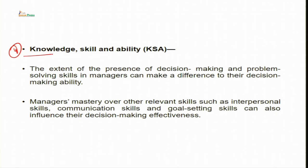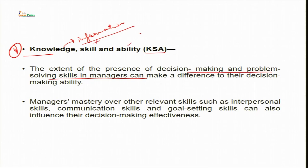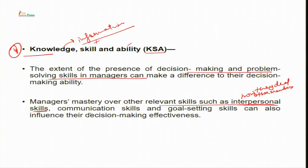The third internal factor is knowledge, skill and ability of the manager. The extent of decision making and problem solving skills in a manager can make a difference to their decision making ability. Managers differ in their knowledge, skill and ability — the information a manager carries, along with their skill and ability to take courageous or risk-taking decisions, differentiates them from each other. A manager's mastery over interpersonal skills, communication skills and goal setting skills can also influence their decision making effectiveness.